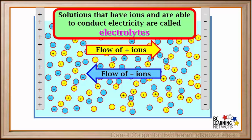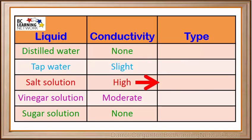Solutions that have ions and are able to conduct electricity are called electrolytes. Salt solutions are examples of electrolytes. Because salt solutions have high conductivity, they are called strong electrolytes.